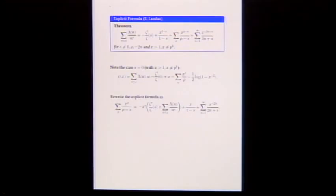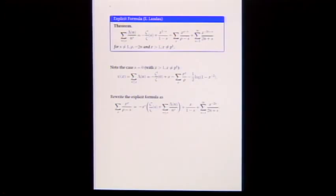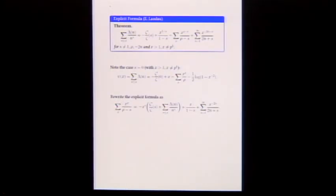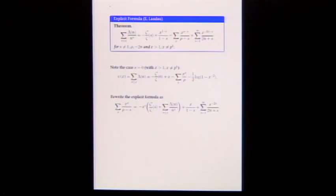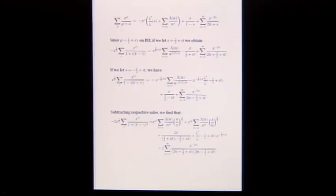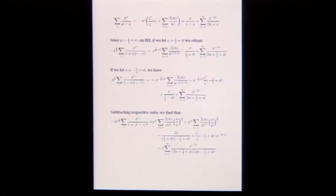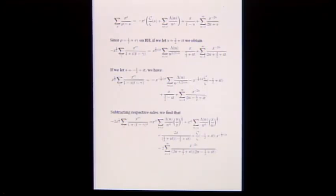Take this and rewrite it: move the sum over non-trivial zeros to the left-hand side, put everything else on the right, and group together zeta prime over zeta with the truncated series. This is just basic algebra, even though it may look messy at first.